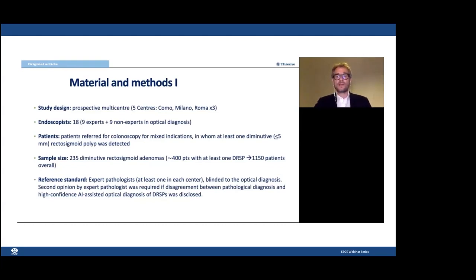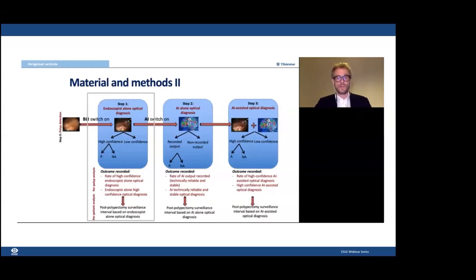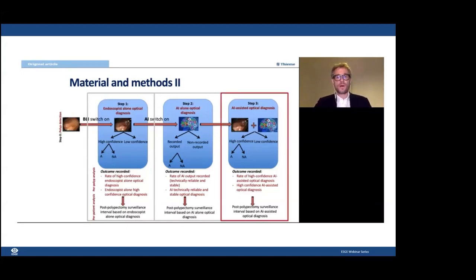We planned to collect at least 235 diminutive rectosigmoid adenomas. This was a step-by-step study: when a diminutive rectosigmoid polyp was identified during standard white-light colonoscopy, blue light was switched on and the endoscopist characterized the polyp as adenoma or non-adenoma. The CADx system was then activated, providing its own output. Finally, the endoscopist combined their initial evaluation with the CADx output to produce a final classification — the so-called AI-assisted combined evaluation — which was compared with pathology as the reference standard.